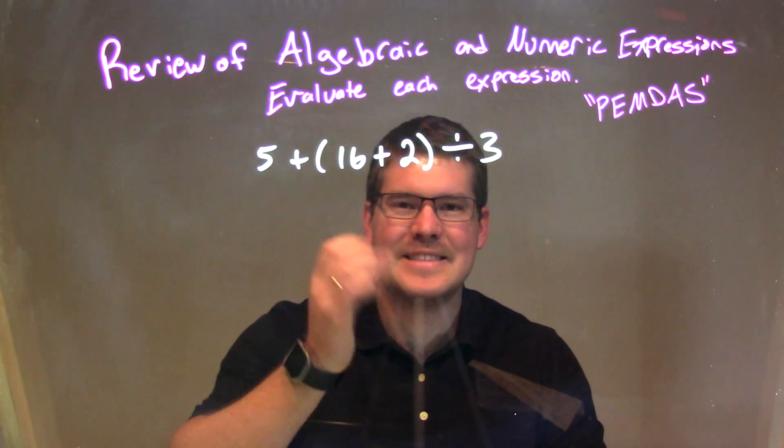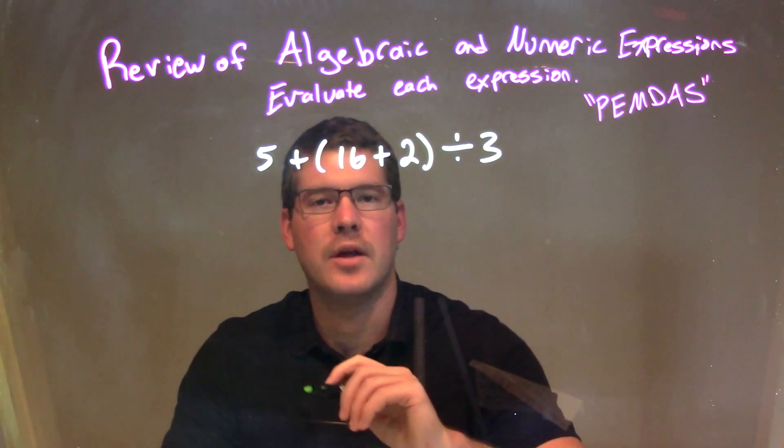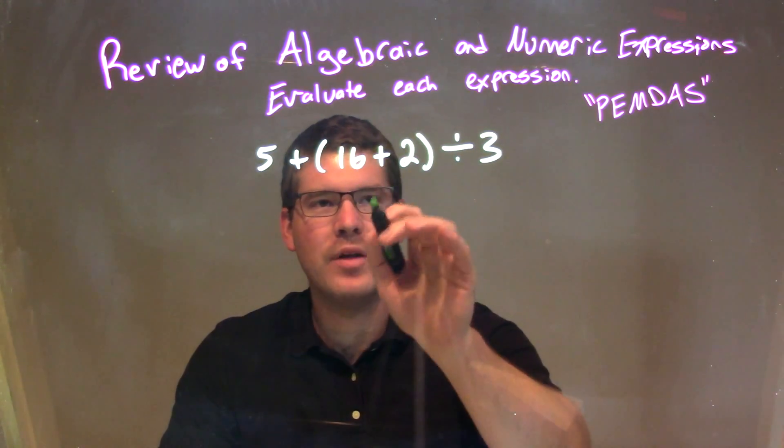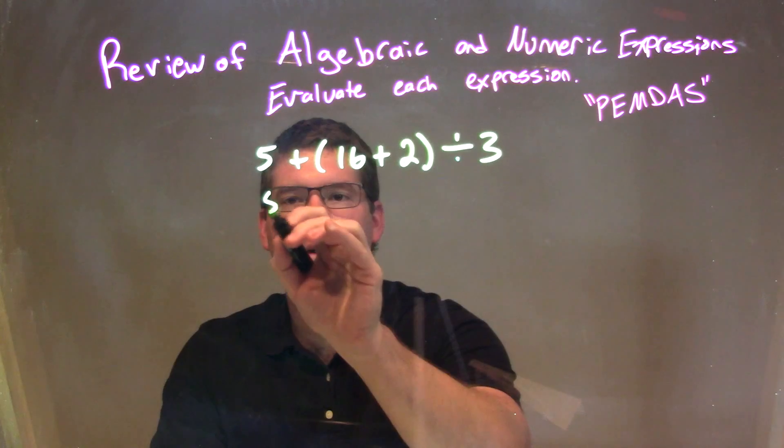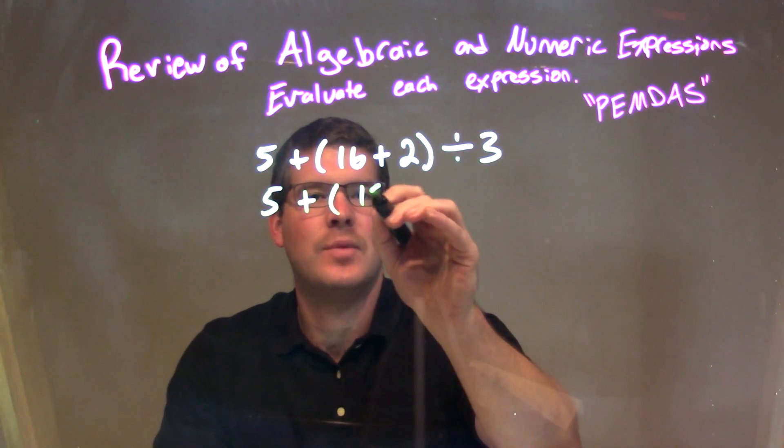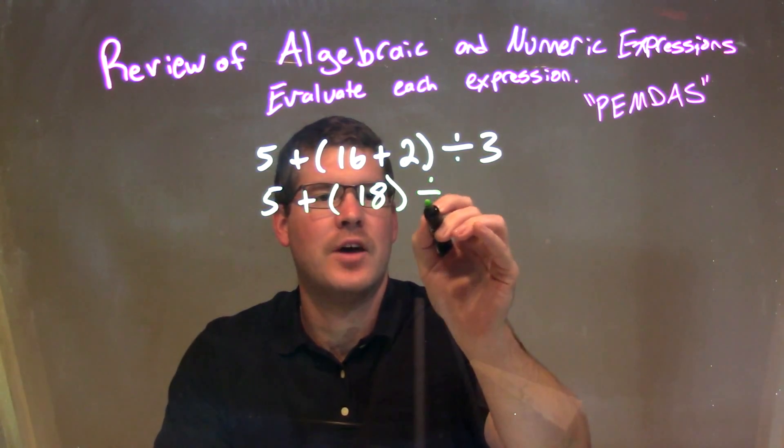Well, our first step is to deal with inside the parenthesis, with 16 plus 2. So inside that parenthesis, we need to simplify that. So we bring down 5 plus, 16 plus 2 comes out to be 18, and then we divide it by 3.